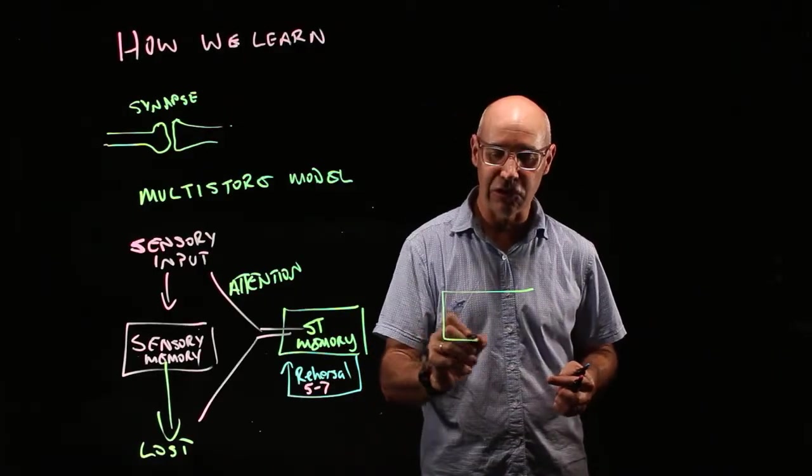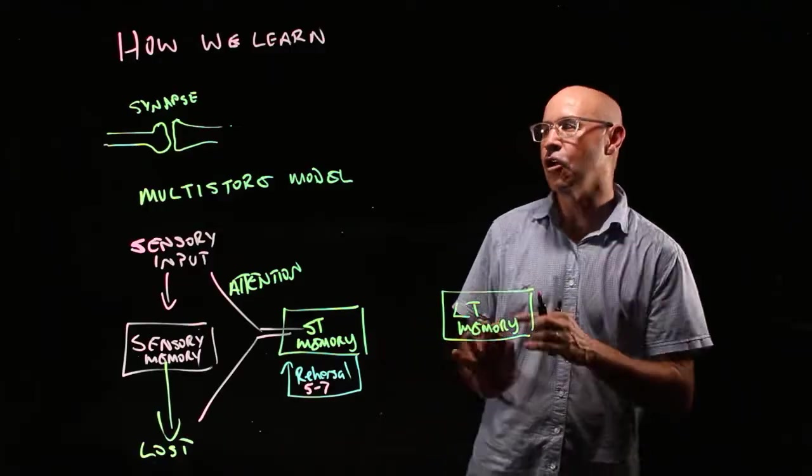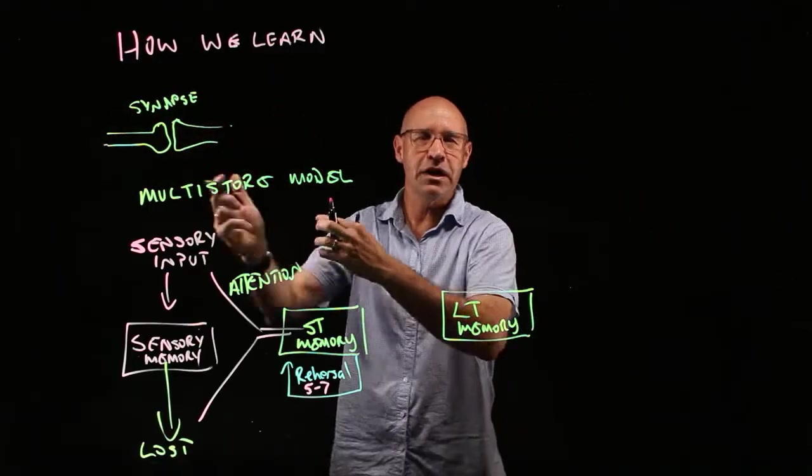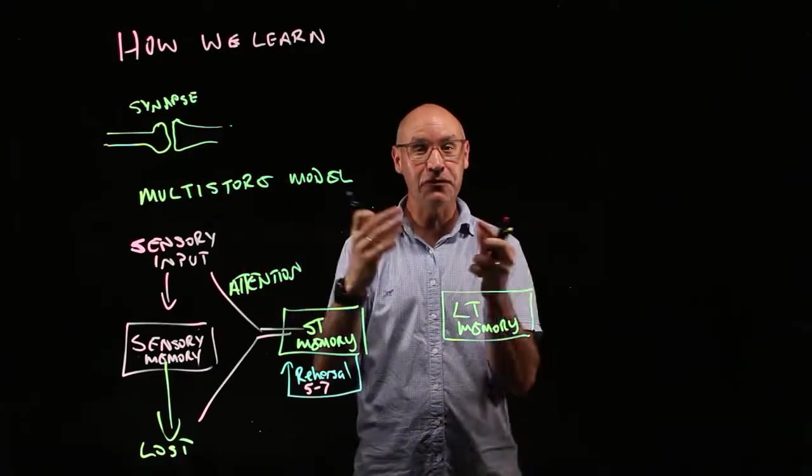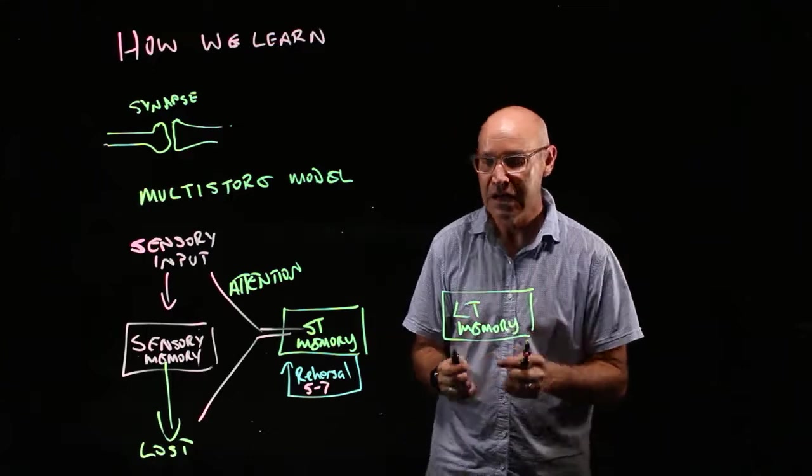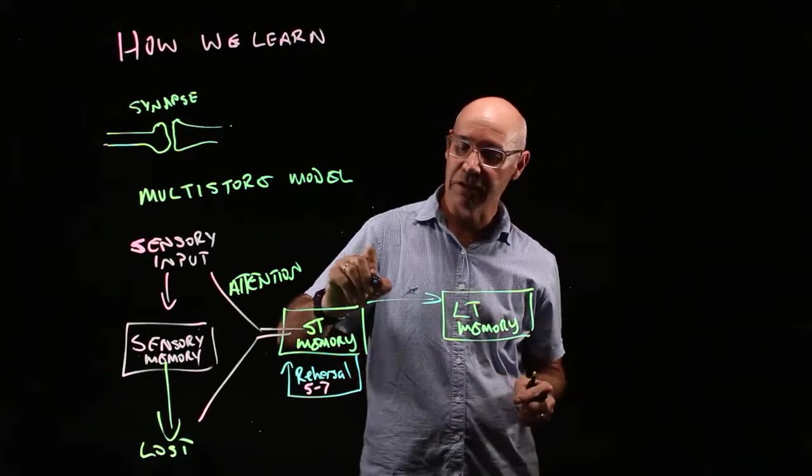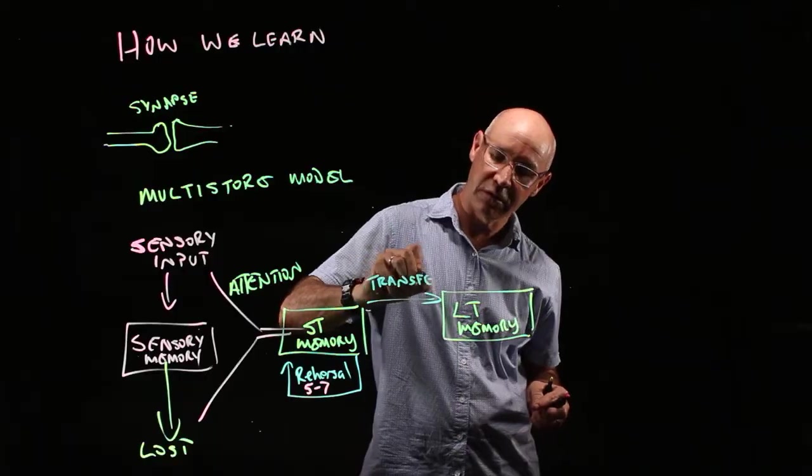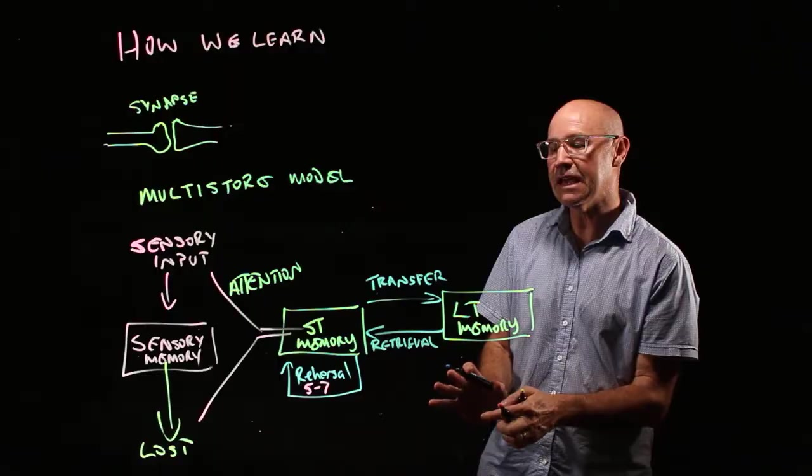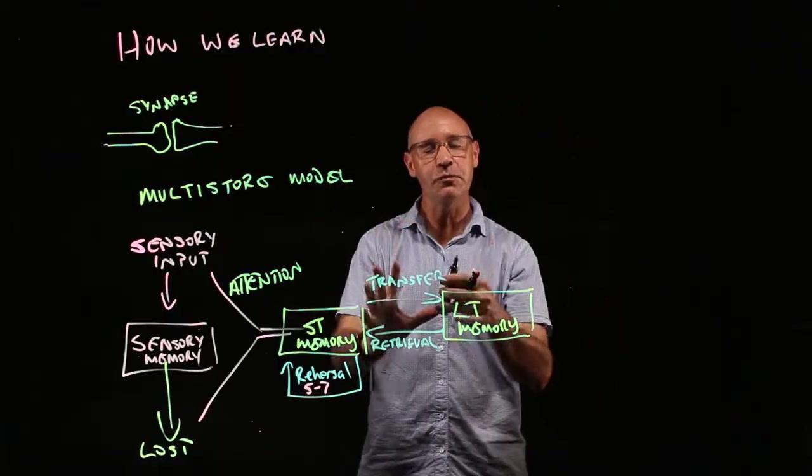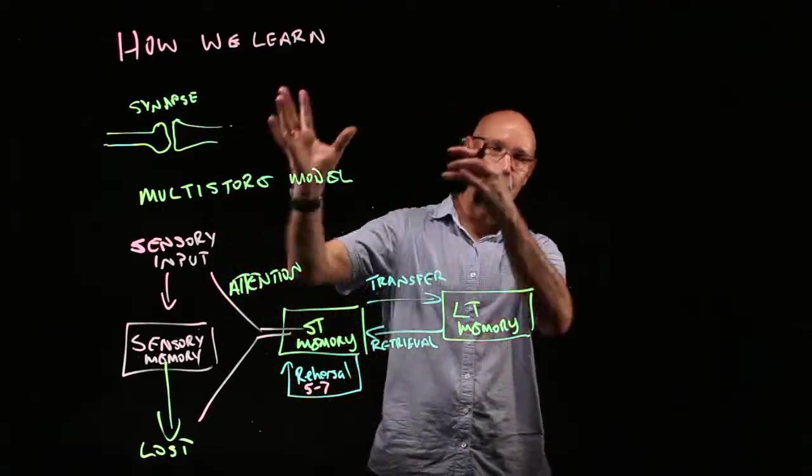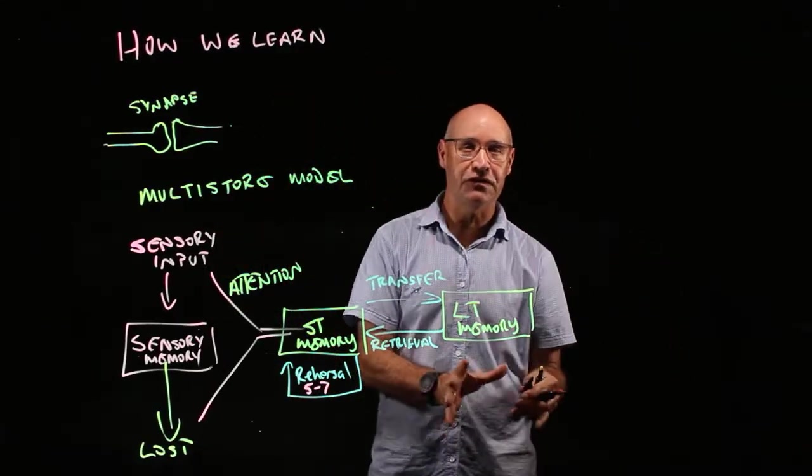And the next step is of course our long-term memory. Now our long-term memories are the synapses. It's the connection between the nerves, it's a physical connection and this web of interconnectedness that occurs. So how does it go from short-term to long-term memory? Well that's called transfer. And then of course getting it out is retrieval. All right so now we need to talk about what can we do, what do we know from cognitive science to help this process of going from short-term memory to long-term memory and really stick.